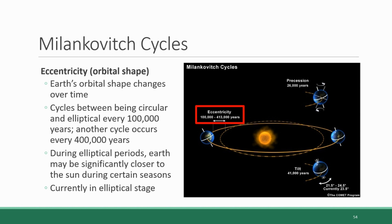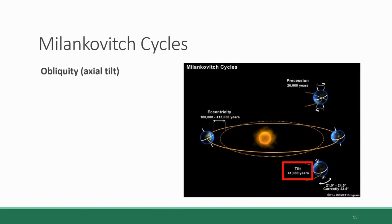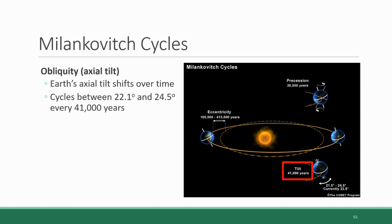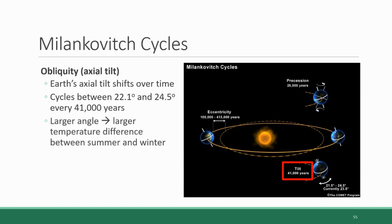The second characteristic of Earth's planetary movement is obliquity, also known as axial tilt. Just like Earth's orbit shape changes over time, the degree of the tilt in Earth's axis also shifts over time. It cycles between 22.1 degrees of tilt and 24.5 degrees of tilt and back every 41,000 years. This is significant because the more dramatic the angle of the tilt, the larger the difference is between temperatures seen in winter versus during summer. At the present time, the Earth's axis tilt is at 23.5 degrees and moving in the decreasing direction towards 22.1 degrees.